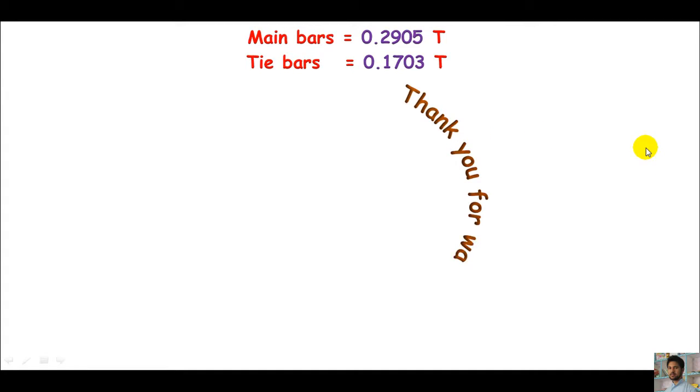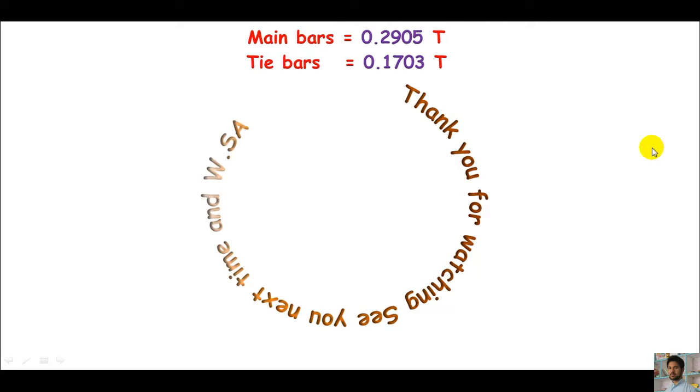So to summarize: the main bars weigh 0.2905 tons and the tie bars weigh 0.1703 tons. Thank you for watching. See you next time. Wassalam.